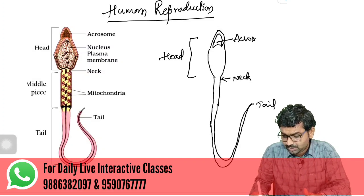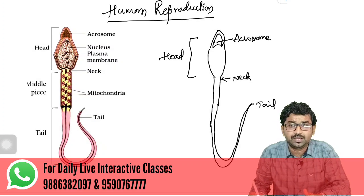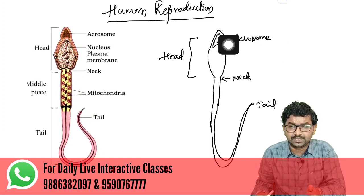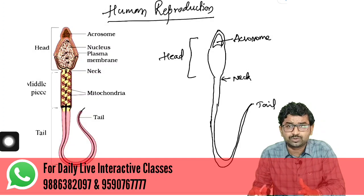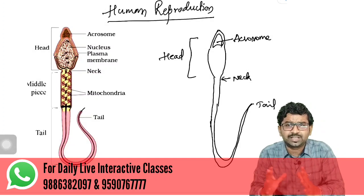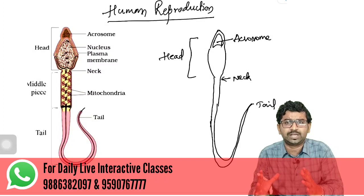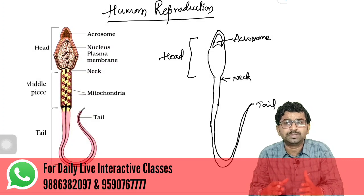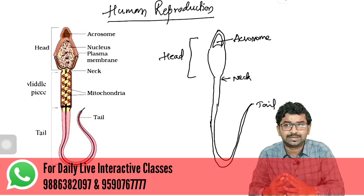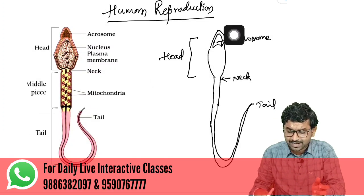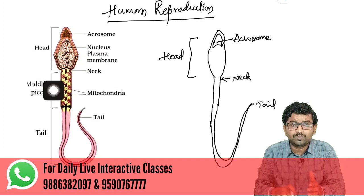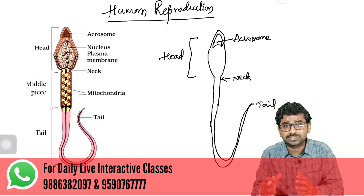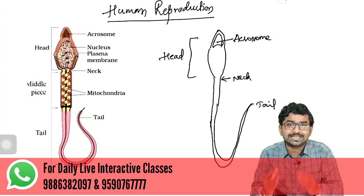You should draw a structure like this. This is called the Acrosome. Every sperm cell has this structure called Acrosome. This Acrosome is like a cap — similar to a lysosome. While the sperm cell enters the female reproductive tract during fertilization, this Acrosome is important for breaking the outer boundary.